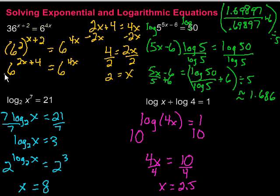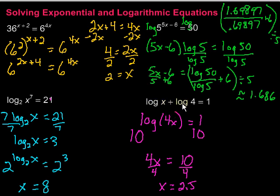So, solving exponential and logarithmic equations: one strategy is to get the same base — if we can do that, we set the powers equal and solve for the variable. Sometimes we'll have to take the log of each side if we can't get the same base, and then use a calculator for estimation. Also remember that if a log has something to a power, we can pull that out front. And sometimes we can simplify first, like when two logs are being added, then get rid of the log to free the variable.